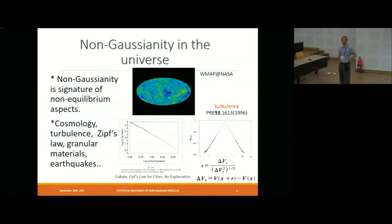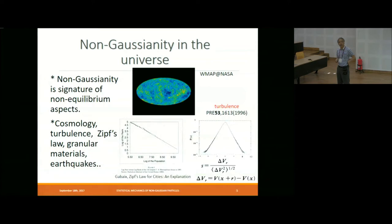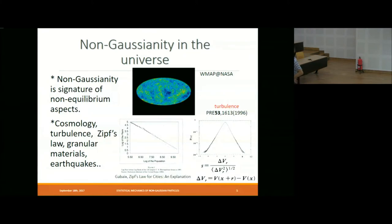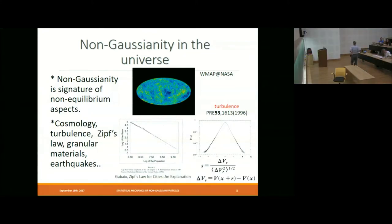You can find a lot of examples of non-Gaussian noise or non-Gaussian fluctuation. This is a map obtained by the CMB map in cosmological observation. You can find fluctuations characterized by non-Gaussian fluctuation. The CMB map is almost Gaussian, but in some situations, non-Gaussianity is large.